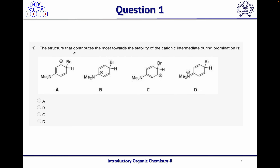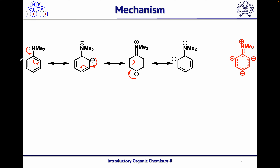The structure that contributes the most towards the stability of the cationic intermediate during bromination is — and they have given different structures for intermediates. This is a bromination reaction on N,N-dimethylbenzene. This N,N-dimethyl group is electron donating as it can involve in resonance effect with the lone pair of electrons on nitrogen.